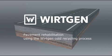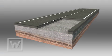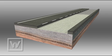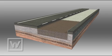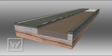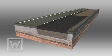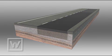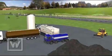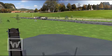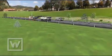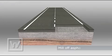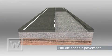Pavement rehabilitation using the Vietgen cold recycling process — a method for the complete rehabilitation of pavements in five steps: mill off asphalt pavement, pre-spread cement, stabilize subgrade, produce and pave base layer, and pave surfacing. The following animation shows the sequence and individual process steps of the construction project.